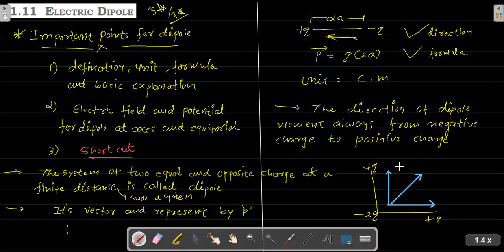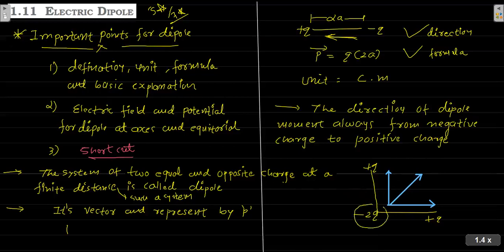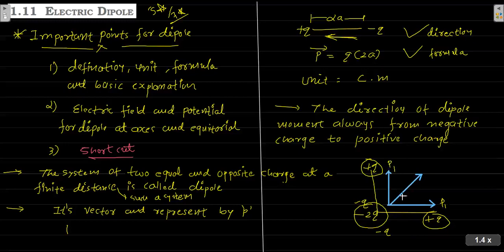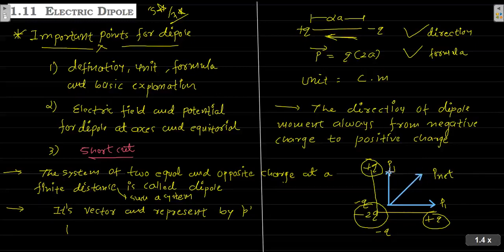Here I have taken an example not from the book, just for understanding. We have a 2Q charge and a Q charge. This system will have a plus Q and minus Q arrangement, so two dipole moments P1 and P2 are created. Since dipole moment is a vector, we find the net resultant dipole moment using the vector sum.